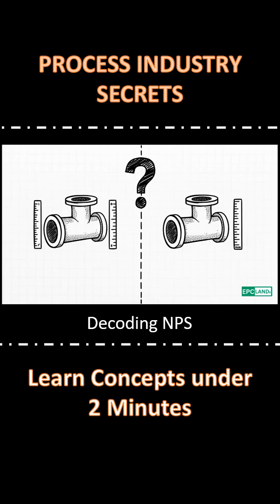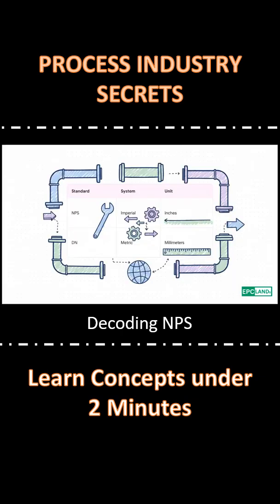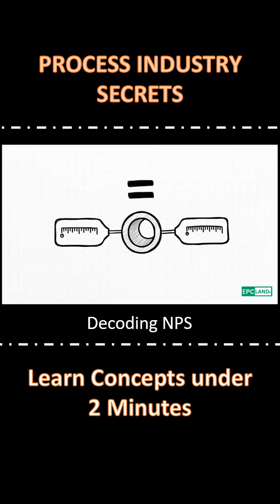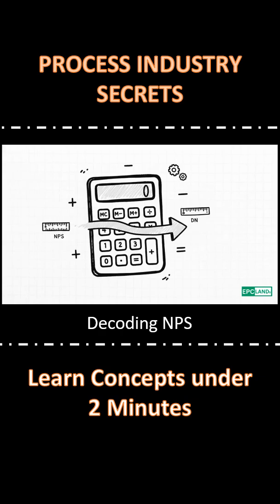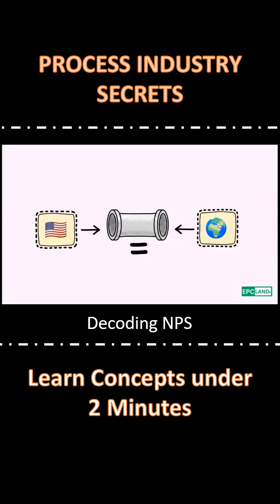So how do they actually relate to each other? Think of them as two languages for the same thing. NPS is imperial, DN is metric. And this is super important — we're not talking about different pipes, it's just two labels for the same thing. For example, a pipe labeled NPS 2 is the exact same size as one labeled DN 50.